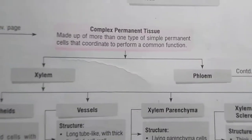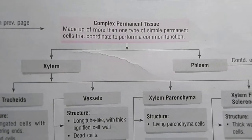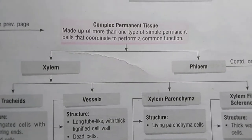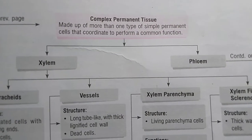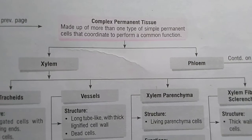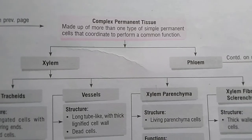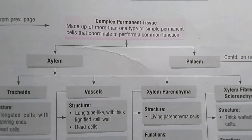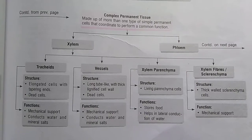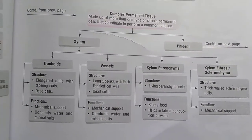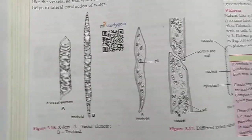The function of complex tissue is to transport water, mineral salts, and food material to various parts of the plant. The two complex tissues are xylem and phloem, also known as conducting tissues, because xylem conducts water and minerals to the leaves, and phloem transports the prepared food to all parts of the plant.